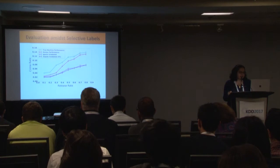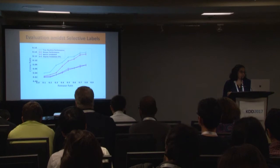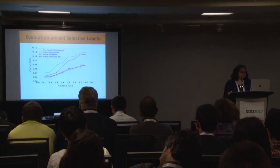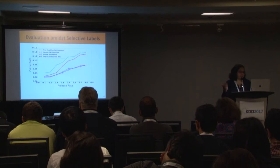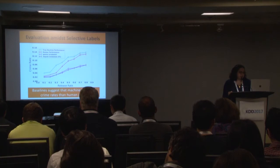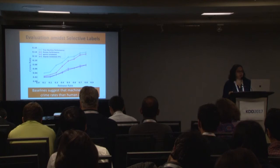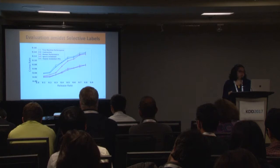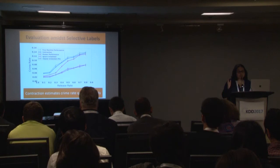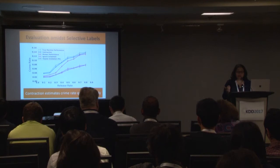Looking at the baselines: ignore unlabeled (magenta) and impute unlabeled using propensity score matching (brown) both show human judges performing worse than the machine — which is actually not true. They are underestimating how badly machines perform. Our approach, the blue contraction curve, is close to the true machine performance and correctly reflects the true insight: human judges are performing better than the machine in this case.